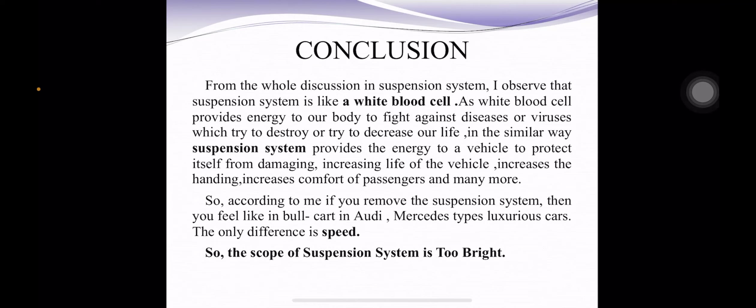From the whole discussion on the suspension system, it is observed that the suspension system is like a white blood cell — just as white blood cells help our body fight against diseases or viruses that try to harm us, a suspension system provides protection to a vehicle from damage, increases the vehicle's life, improves handling, and increases passenger comfort. According to theory, if you remove the suspension system, then you would feel like riding in a bullock cart even in an Audi or Mercedes-type luxurious car — the only difference being speed. So the scope of the suspension system is very bright.